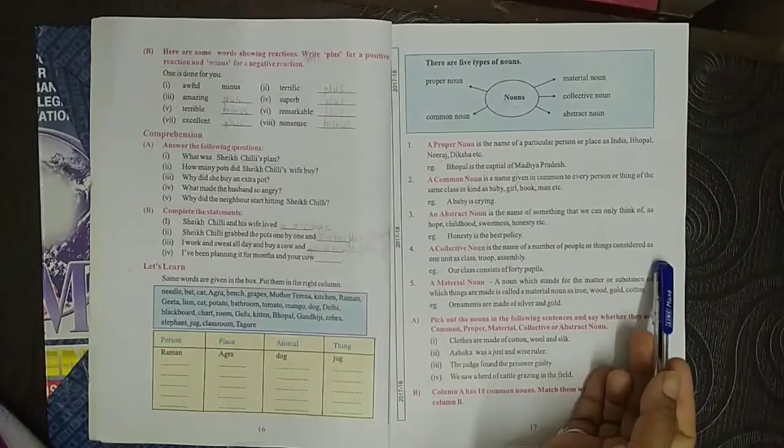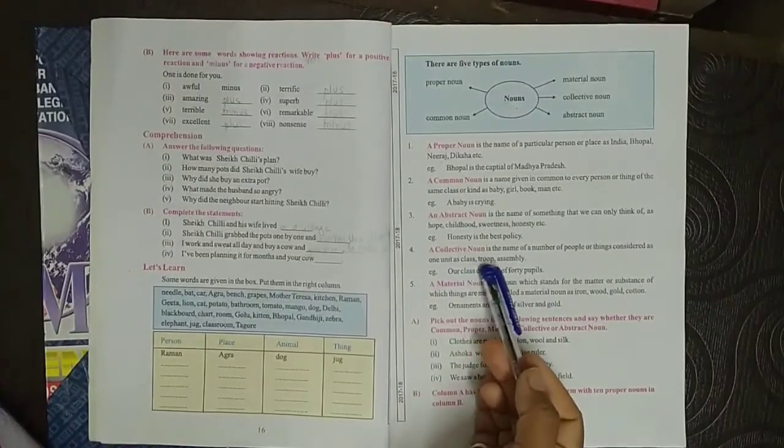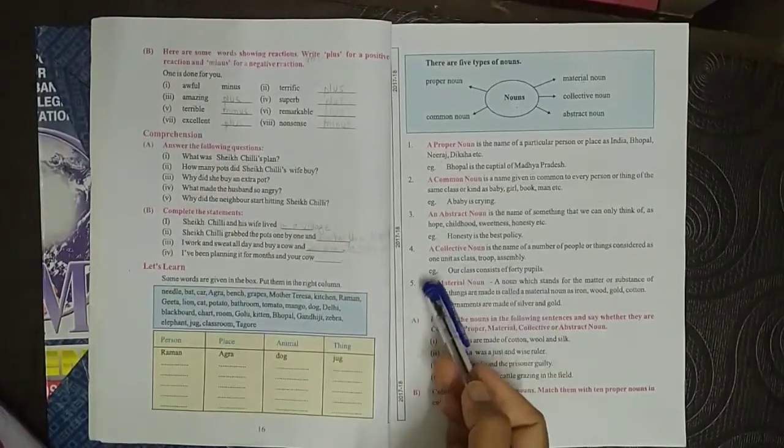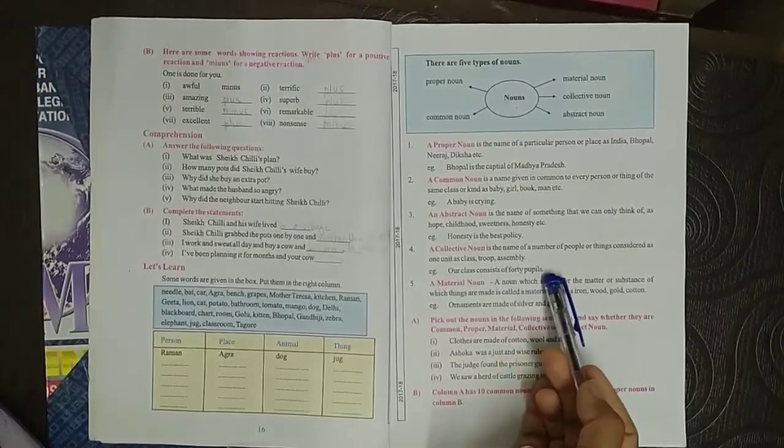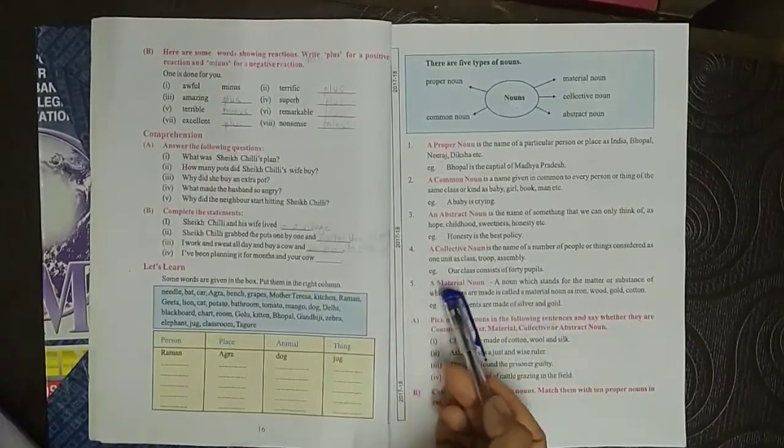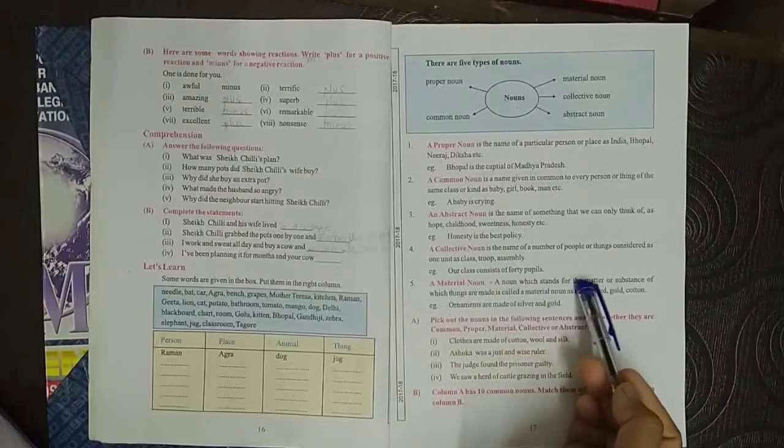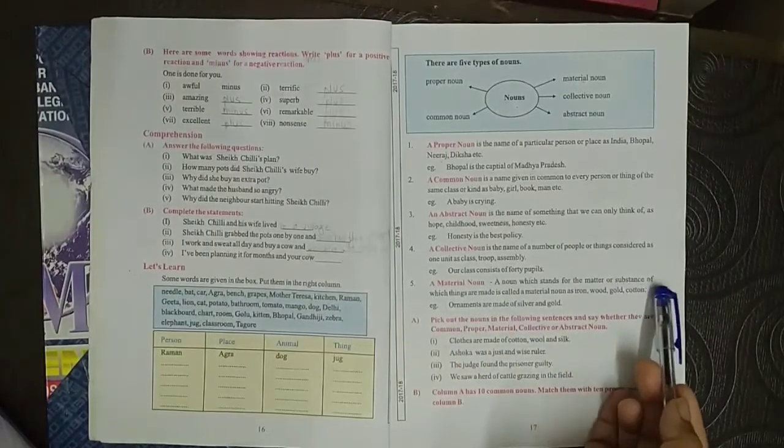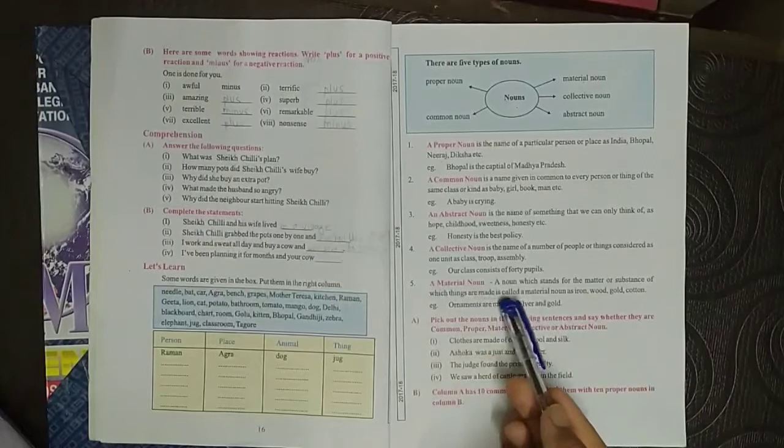Fourth, collective noun is the name of a number of people or things considered as one unit or class: troop, assembly. Example: our class consists of 40 pupils. Fifth, a material noun is a noun which stands for the matter or substance of which things are made.